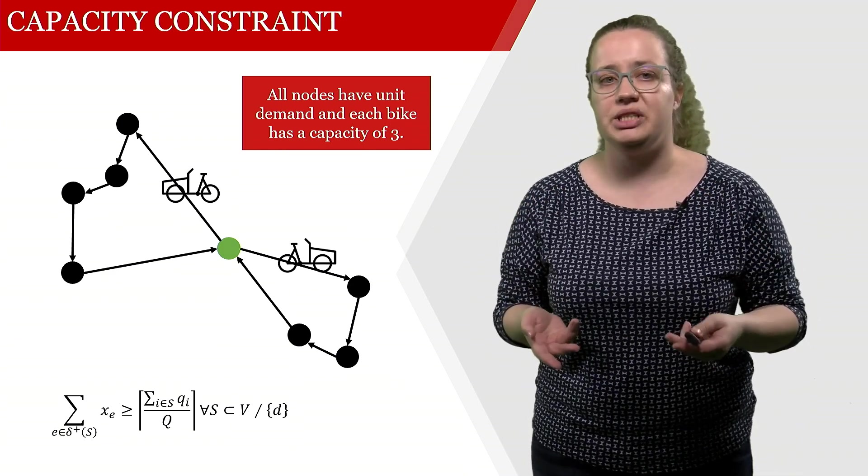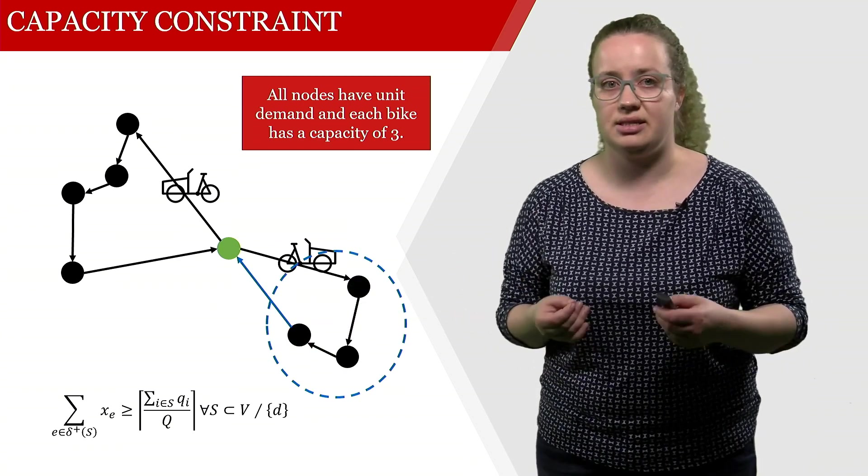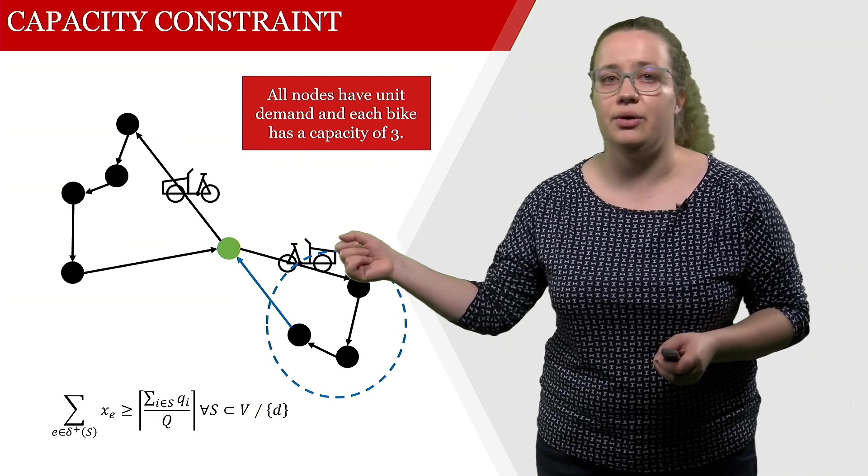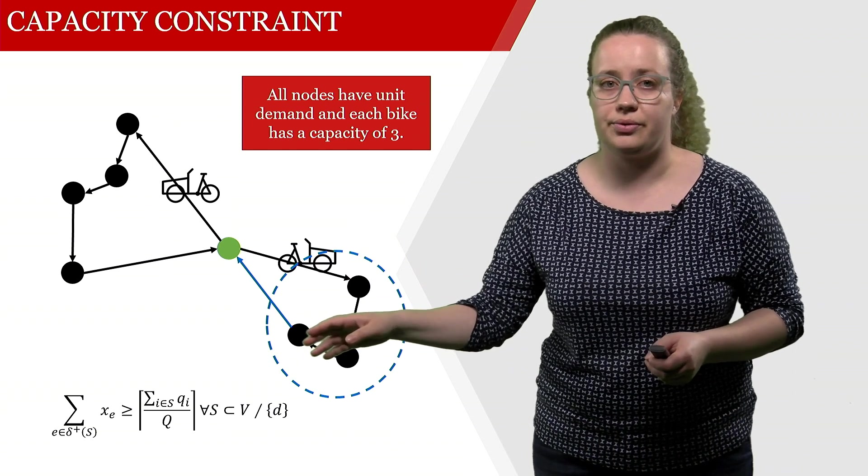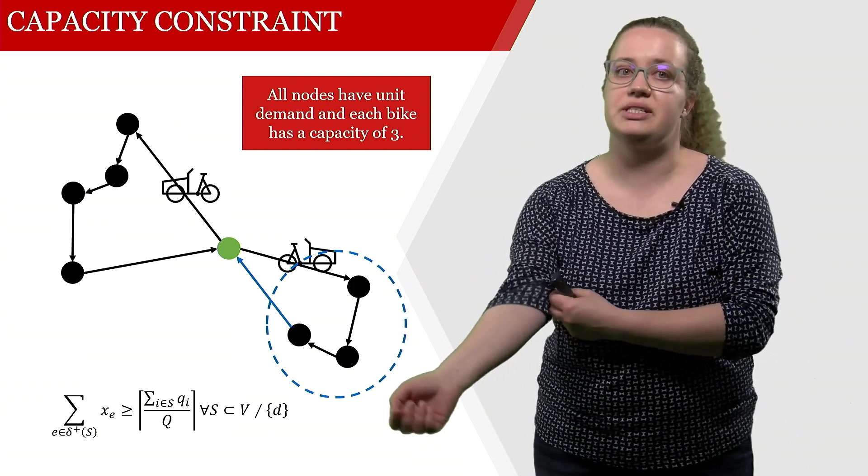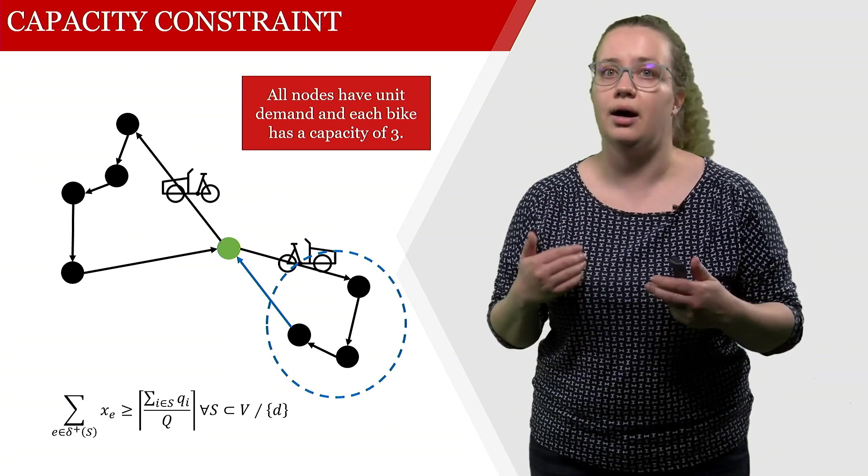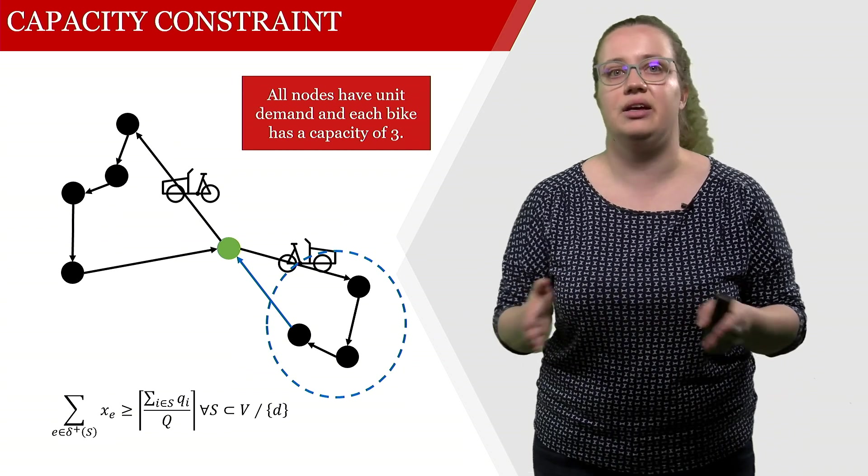If we have this constraint and we have this set, we can count the demand in this subset, which is one, two, three. We divide this by the capacity, which is also three. So we say at least one arc has to leave the subset. That's the blue one, that is fine and we're good.